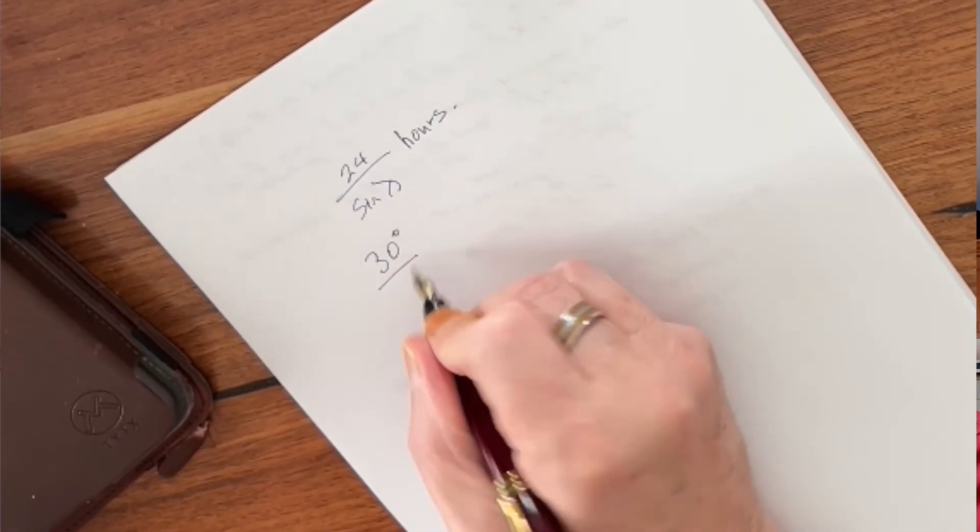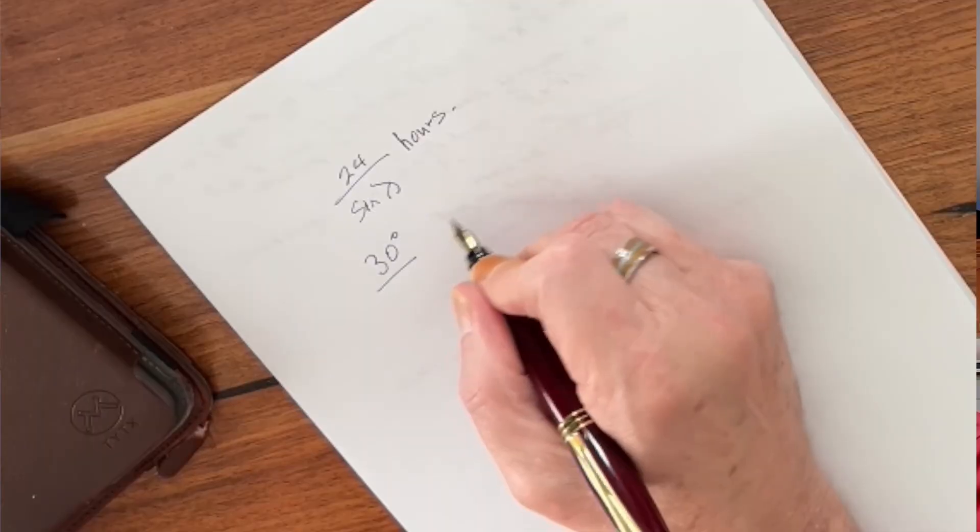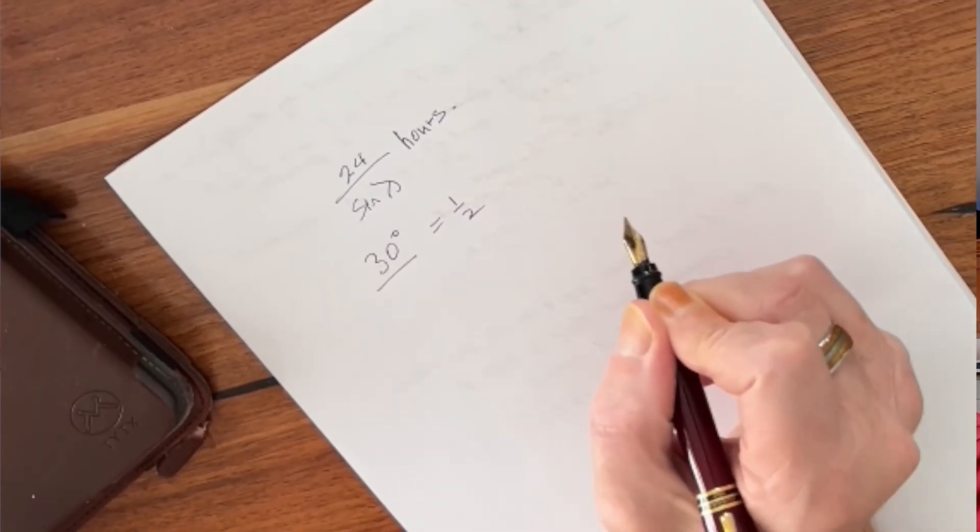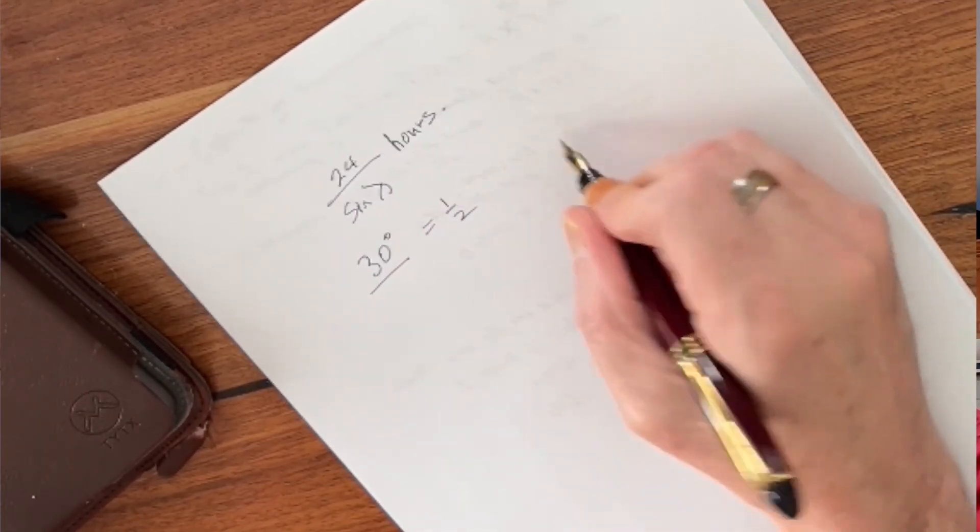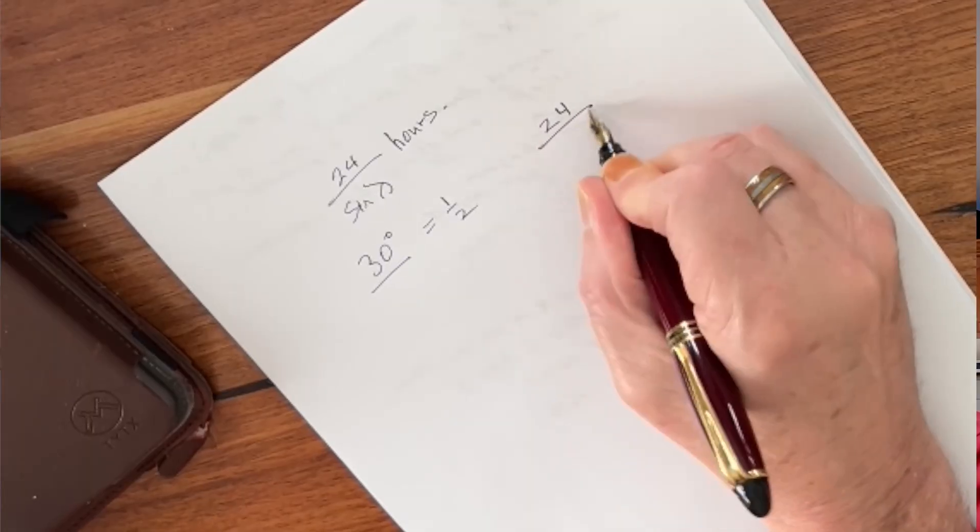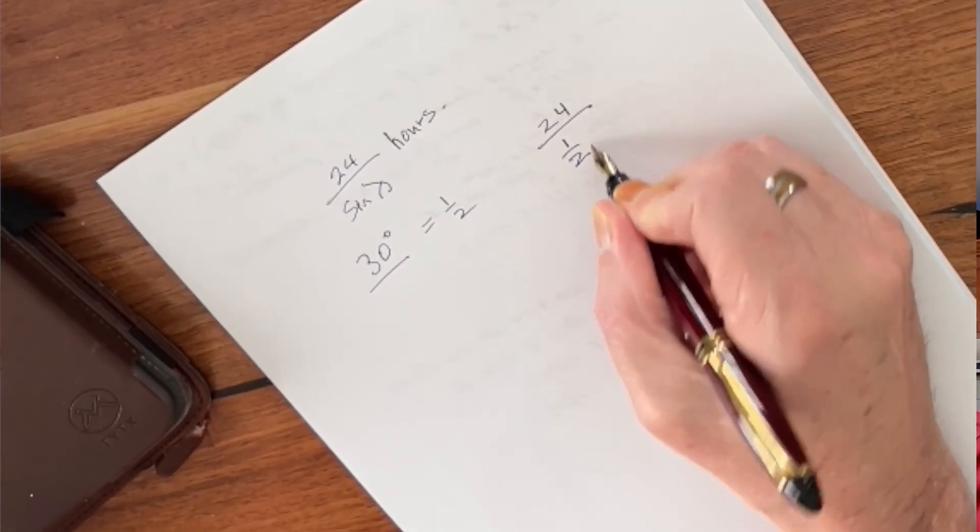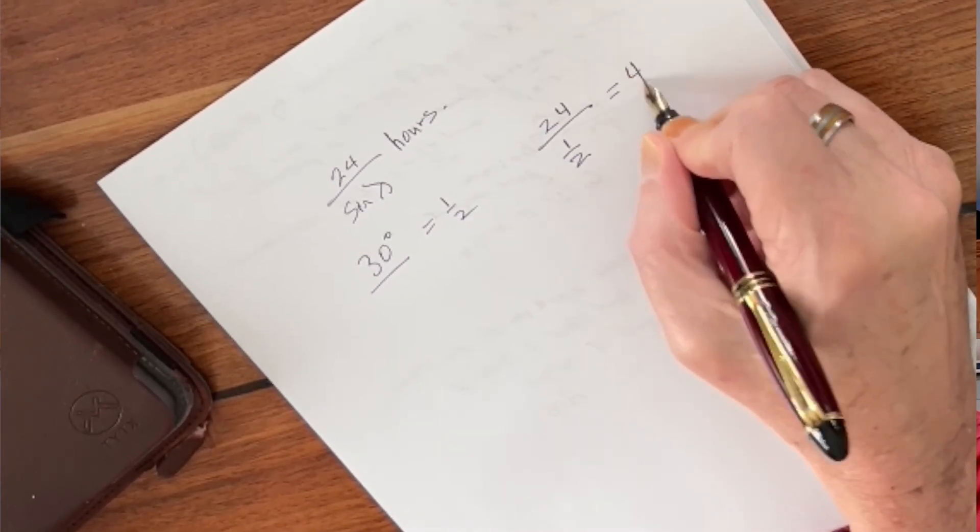So for example, at 30 degrees north, well, what's the sine of 30 degrees? It's one half. So let's go ahead and take 24 hours divided by one half. And what's that going to equal in hours? Well, it's 48 hours. So if you had a Foucault pendulum at say Pensacola, Florida, which I believe is about 30 degrees north, it would make one complete revolution in 48 hours.